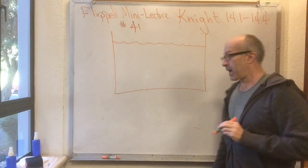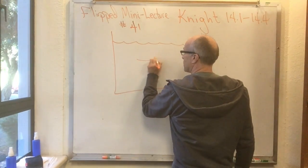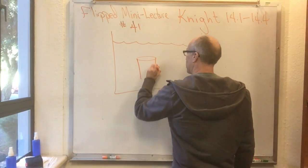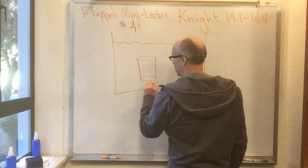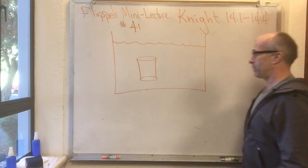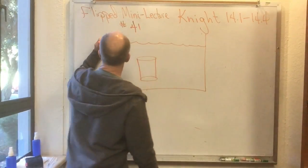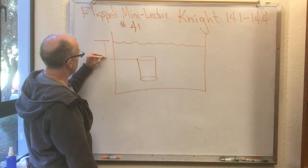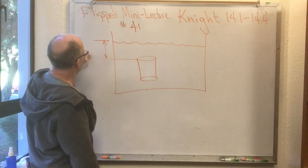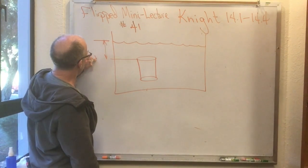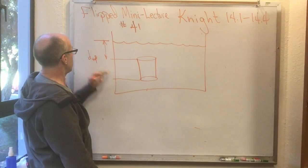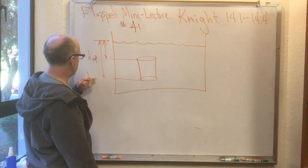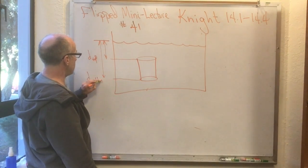The way you do that is by imagining a little cylinder — it could be a cube, but a cylinder may be nicer. Here's the top of the pool, and the top of the cylinder is a distance d-top down from the top of the pool, and the bottom of the cylinder is a distance d-bottom down from the top of the pool. So we've got the depth of the top and the depth of the bottom.